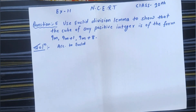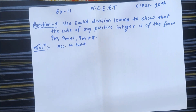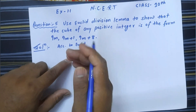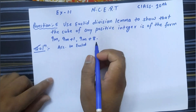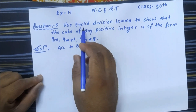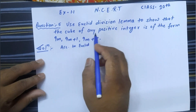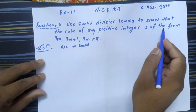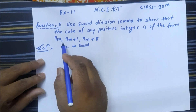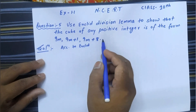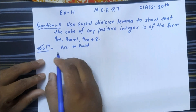Good morning, welcome to PSM Classes. Today we will solve Question Number 5, Class 10th Exercise 1.1 NCERT. The question says: use Euclid's Division Lemma to show that the cube of any positive integer is of the form 9m, 9m+1, and 9m+8.